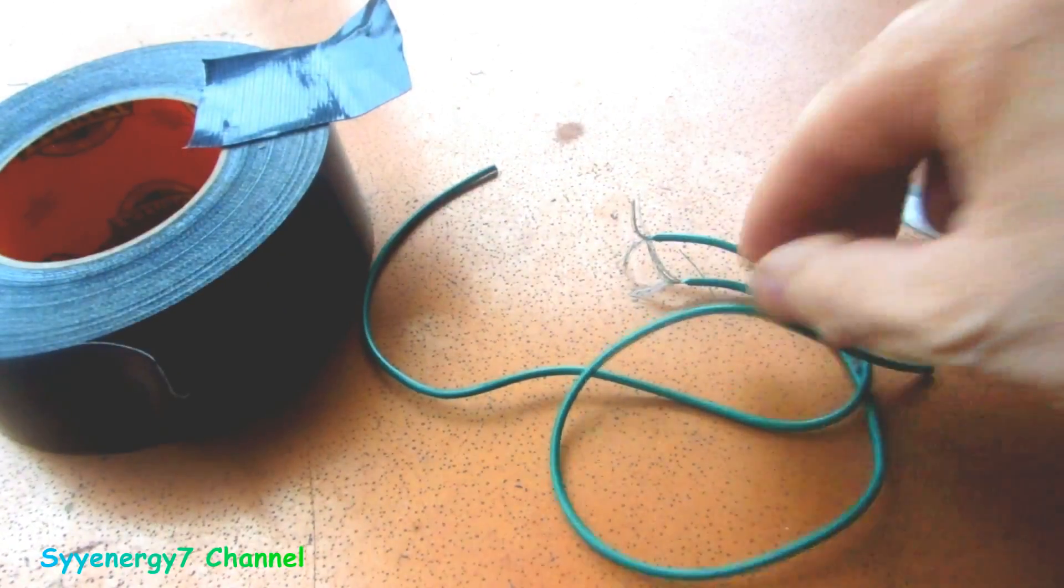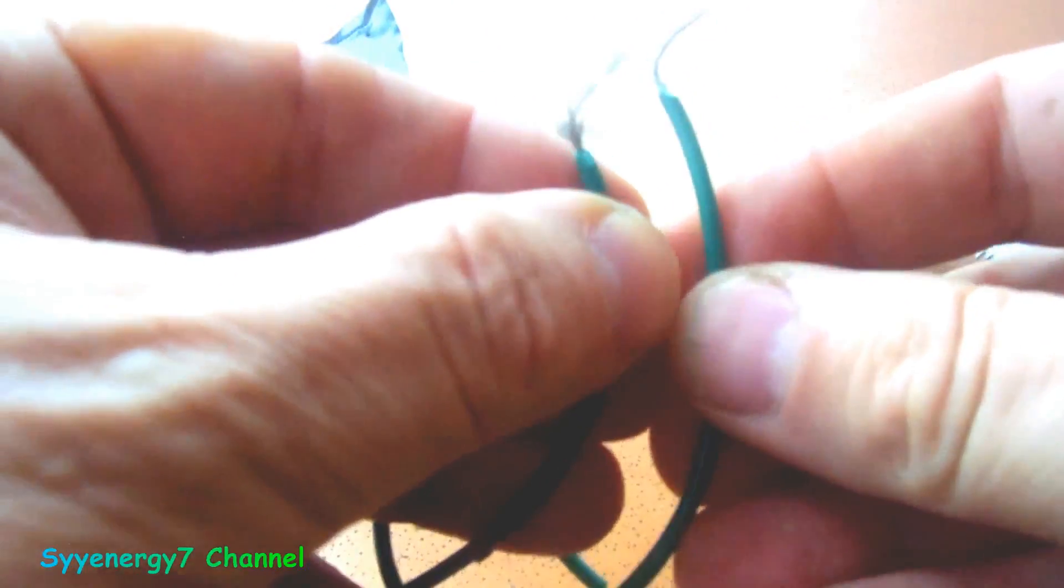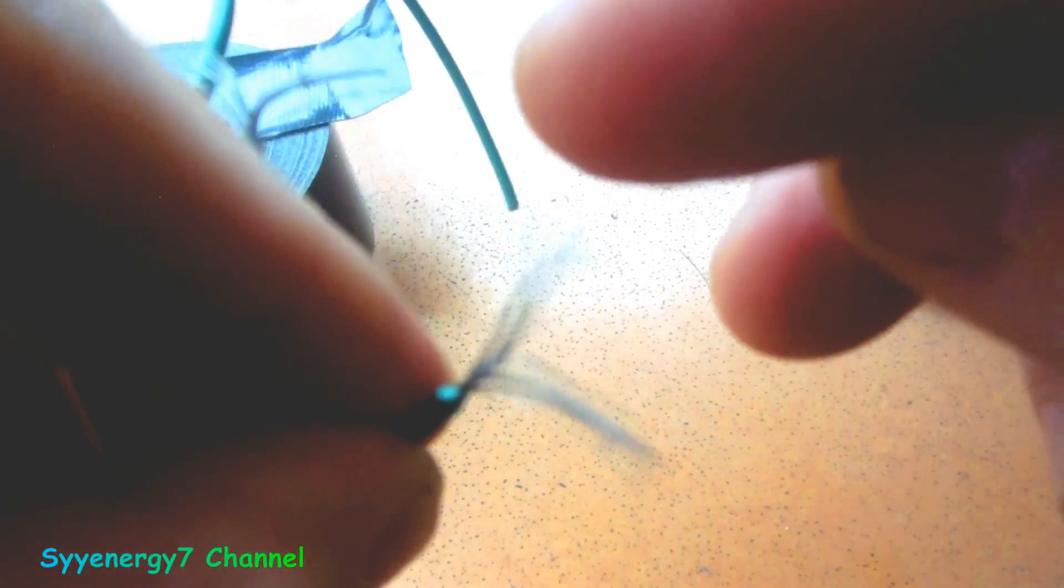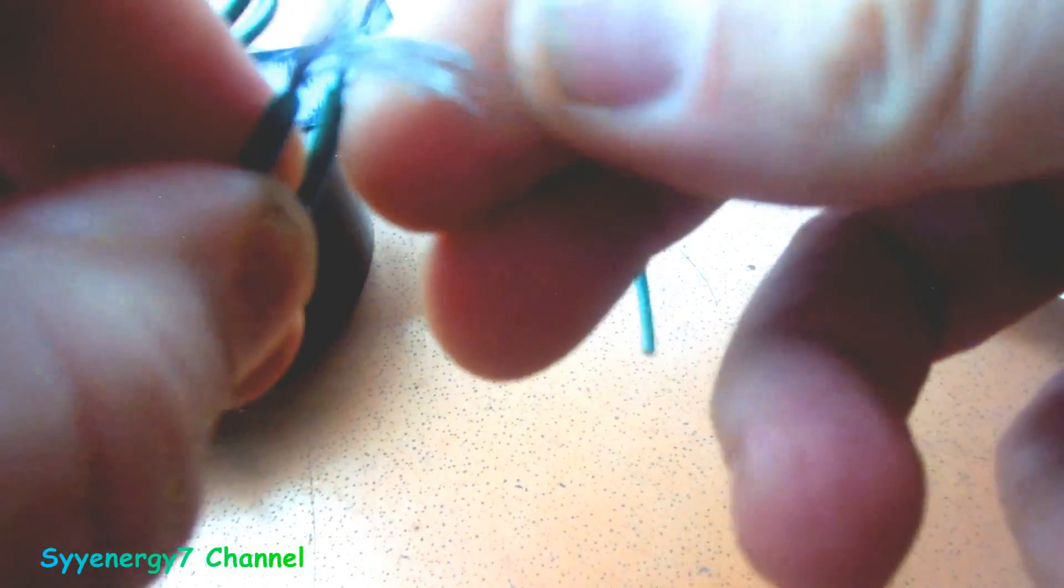It does a very good job of stripping off the insulation on wires. What I do is you notice how I have a group frayed here and a group frayed there. You take one group and split it in half, then you take one group and twist them together.